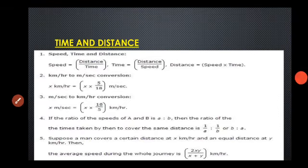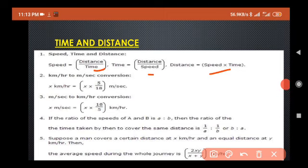Next is time and distance. Here speed is equal to distance upon time, time is equal to distance upon speed, and distance is equal to speed into time. These three formulas. Now kilometer per hour to meter per second, if we are converting, for X km/hr we will multiply by 5/18, then it will be converted into meter per second.